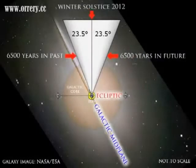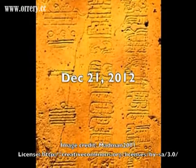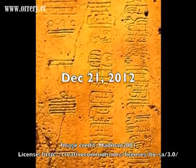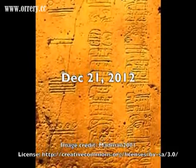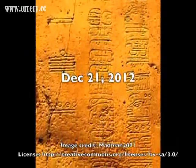The Earth's precessional cone, the sun, and the galactic midplane will precisely align on winter solstice 2012. Author John Major Jenkins calls this phenomenon galactic alignment. The Mayan long-count calendar was designed to end on winter solstice, December 21, 2012.